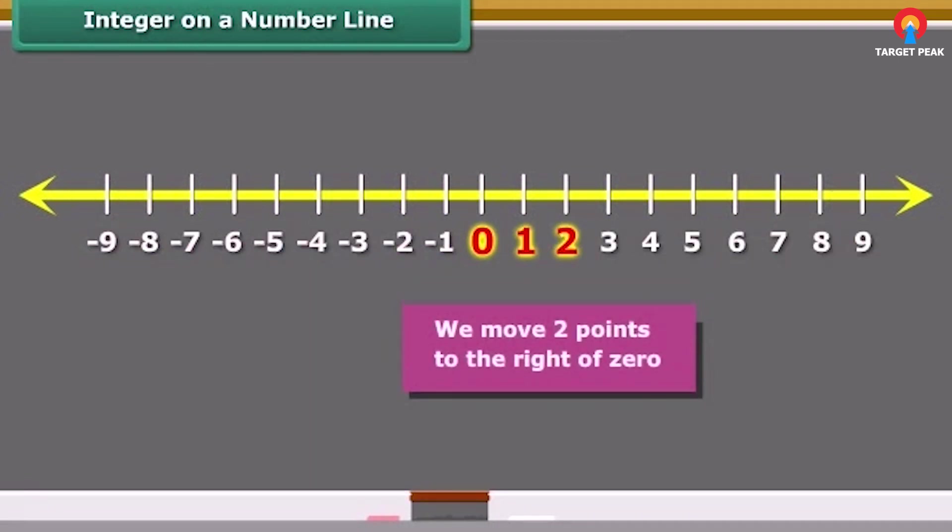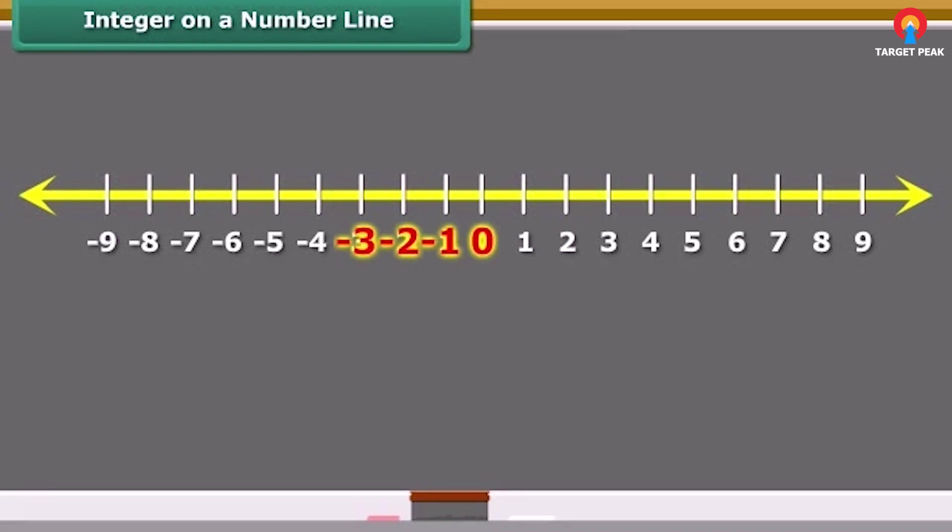Here to mark plus two on the number line, we move two points to the right of zero. Similarly, to represent minus five, we move five points left of zero.